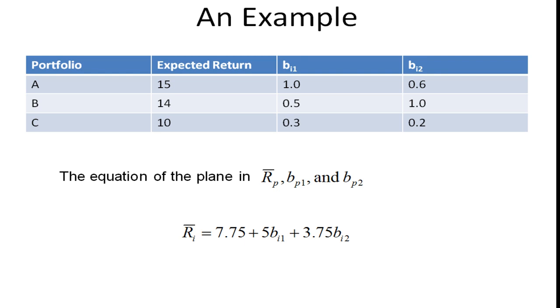So let's look at an example. Suppose we have three portfolios A, B, and C. A has an expected return of 15%, its first systematic risk factor is 1.0, its second is 0.6. B has an expected return of 14%, its first systematic risk factor is 0.5, its second is 1.0, etc.